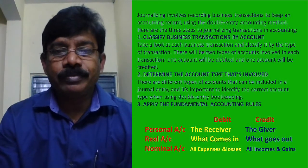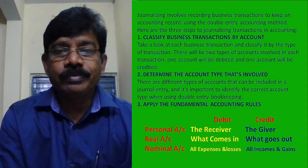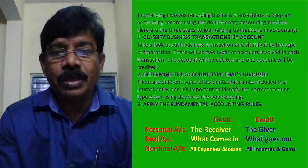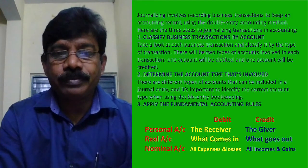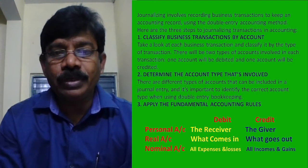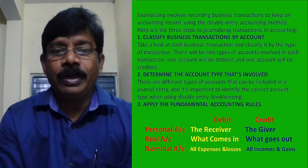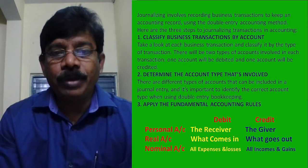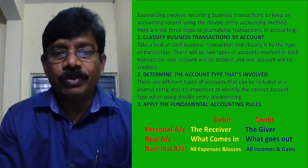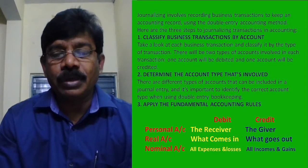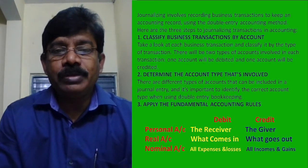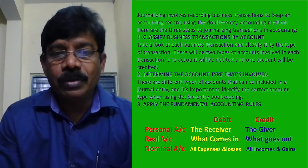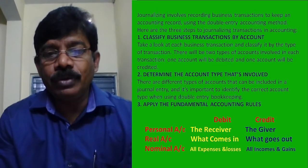While passing a journal entry there are three steps. Step one: classify the business transaction by accounts — how many accounts are affected? Step two: find out the types of those accounts. Step three: apply the rule of that particular type of account. There are two rules for each account type, but we apply only one rule according to the transaction. So the three steps are: identify the accounts, know their type, and apply the rule to debit or credit.